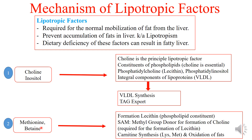Methionine and betaine are methyl donors required for the synthesis of lecithin, a constituent of phospholipids. Methionine acts as S-adenosylmethionine, a methyl group donor for the formation of choline, which is required for lecithin formation. Methionine is also required for the synthesis of carnitine, a transporter for fatty acids that facilitates the oxidation of fats; carnitine is synthesized from lysine and methionine.